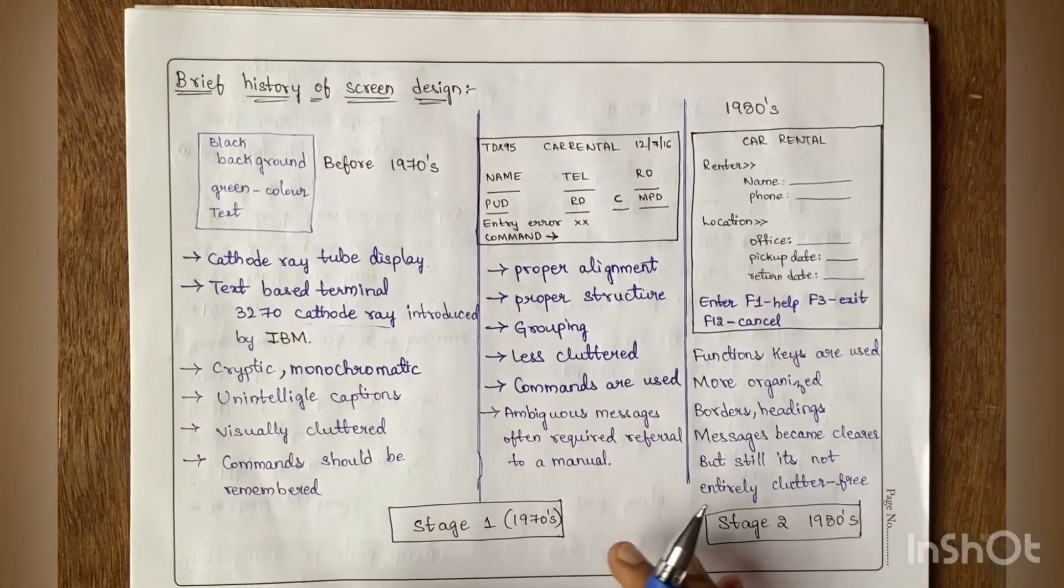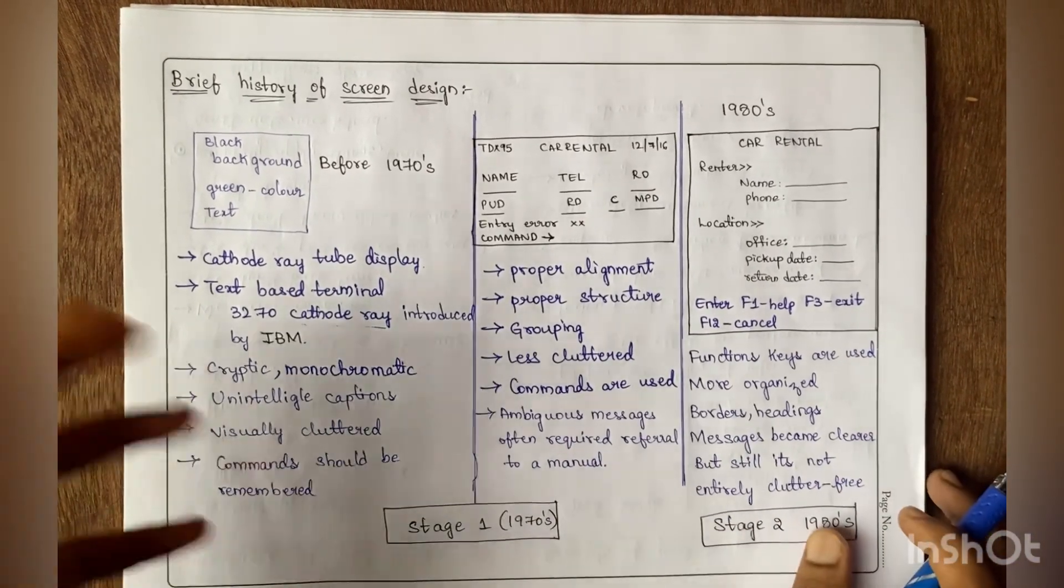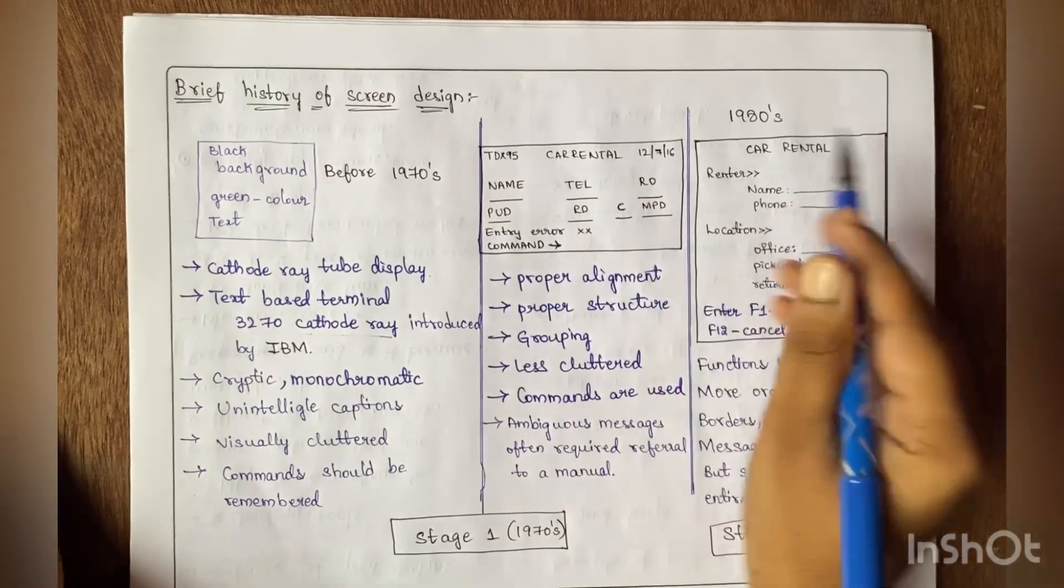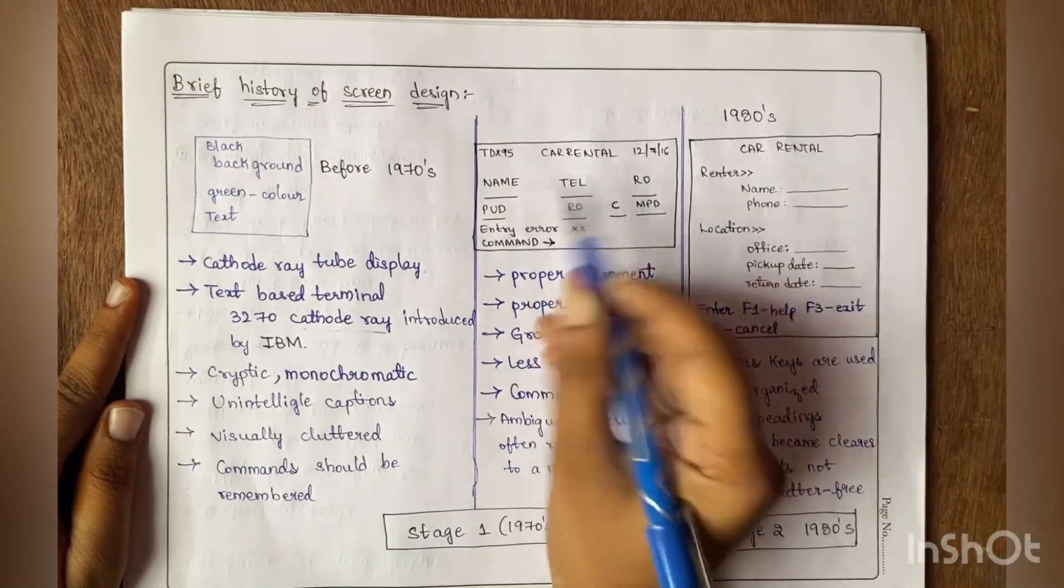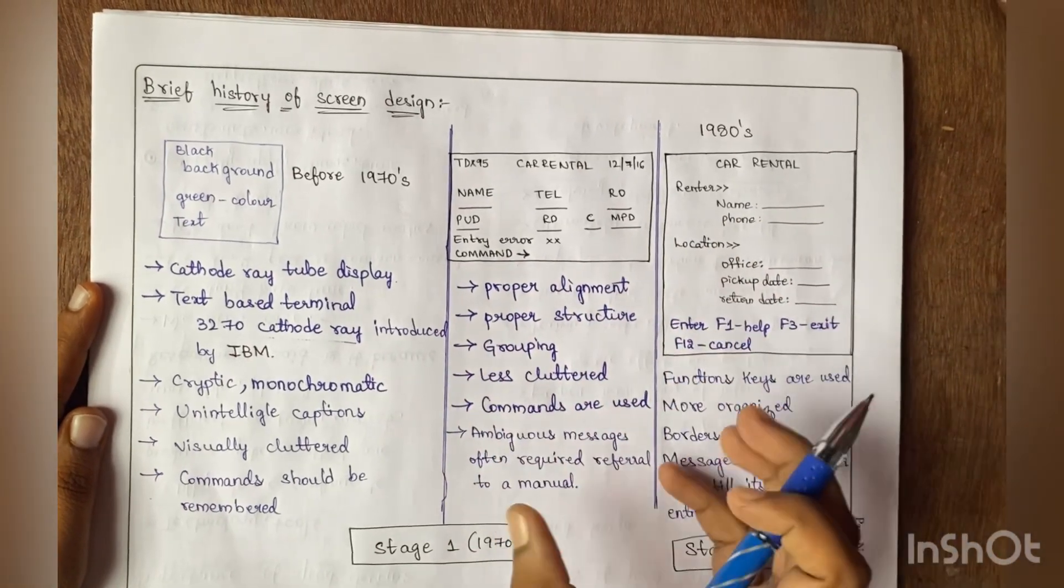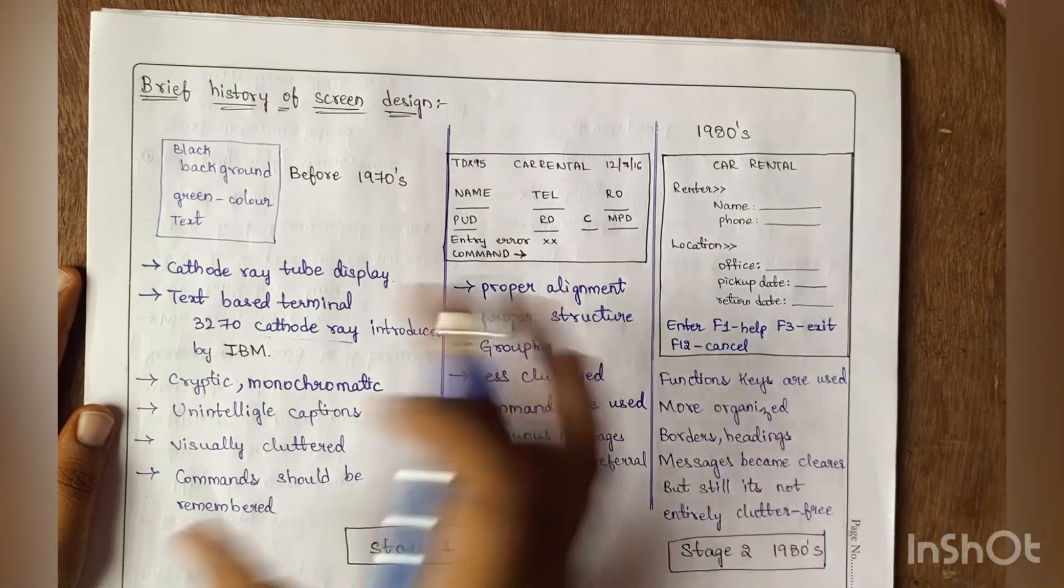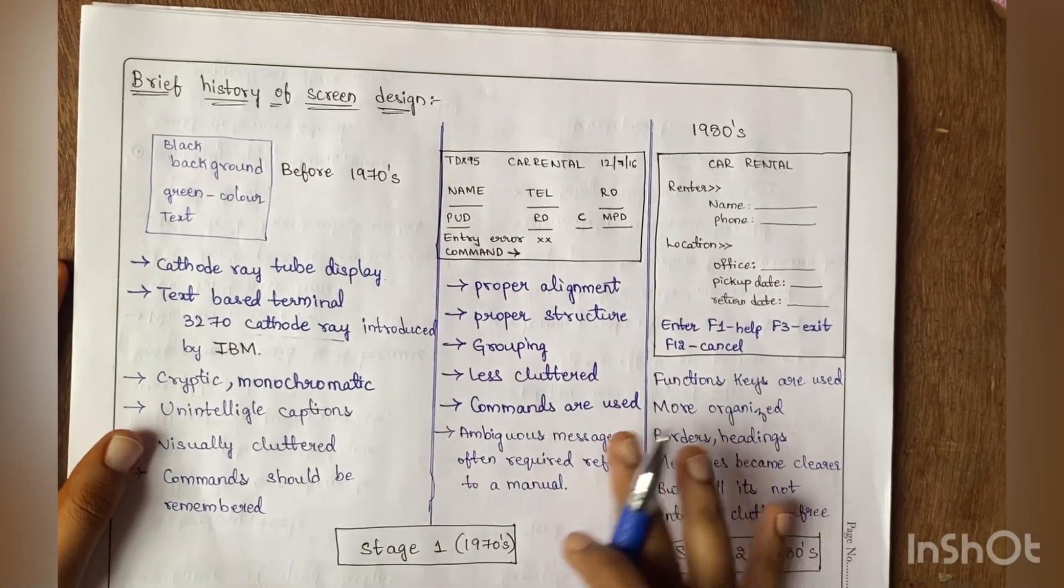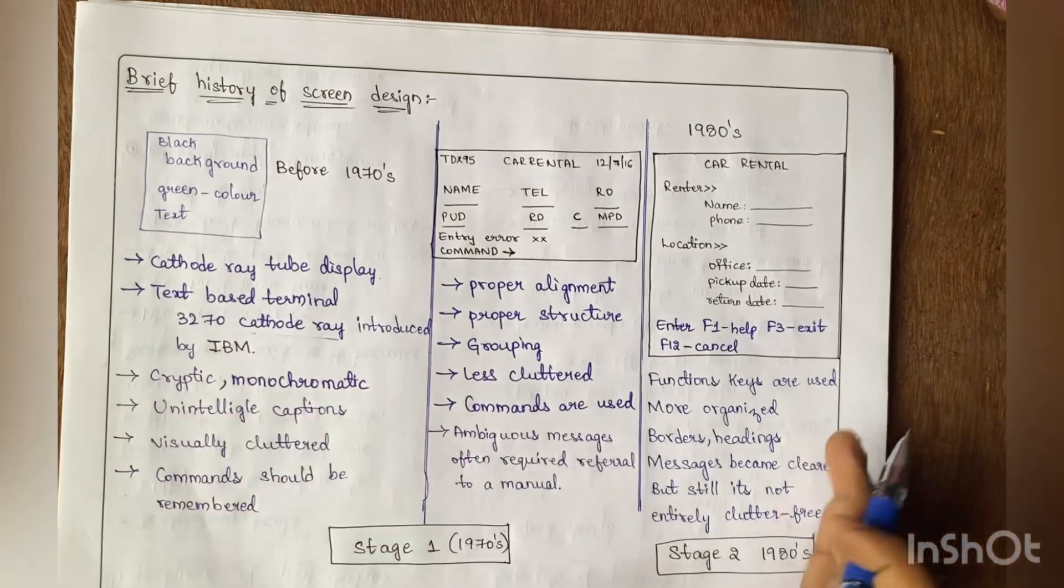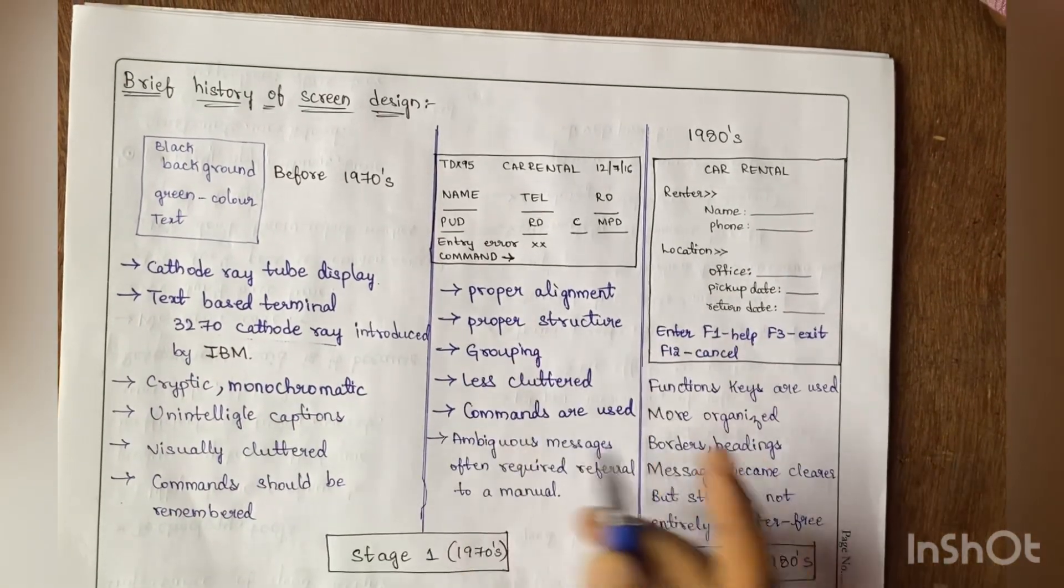We could not understand them clearly, and for everything we needed to remember commands. I've given a small figure here—you can see they have name, telephone number, and all these details, but it's very clumsy, right? They did not have proper alignment, structure, or grouping.